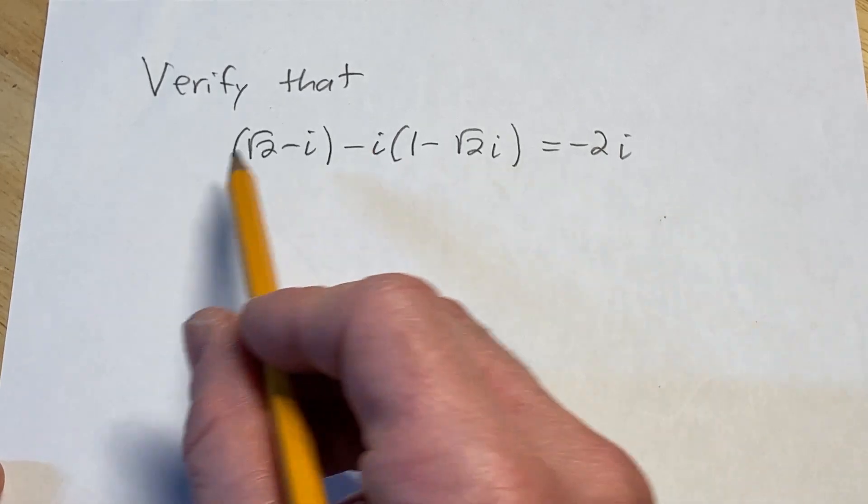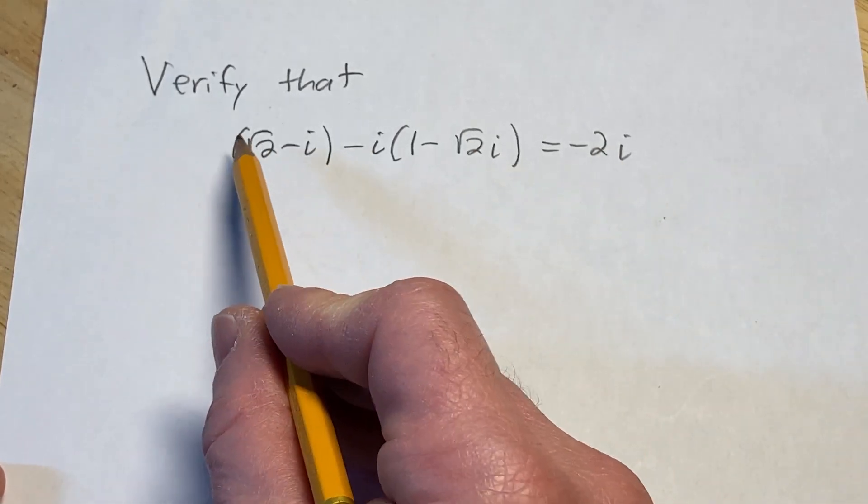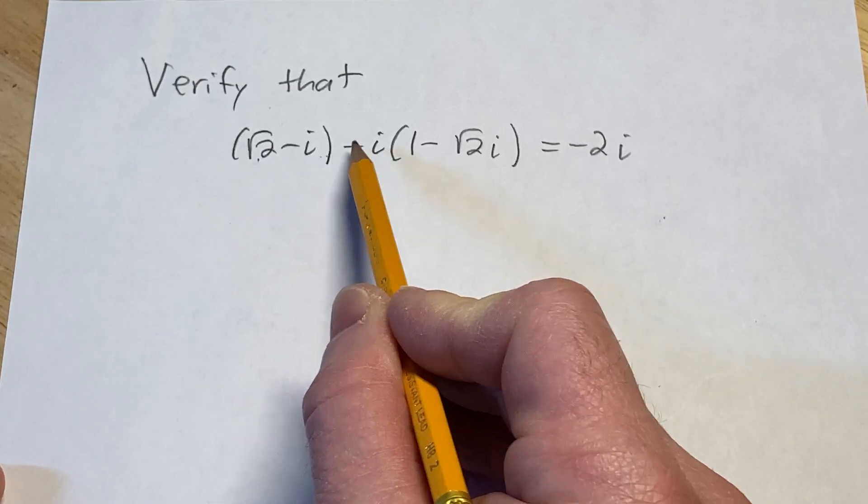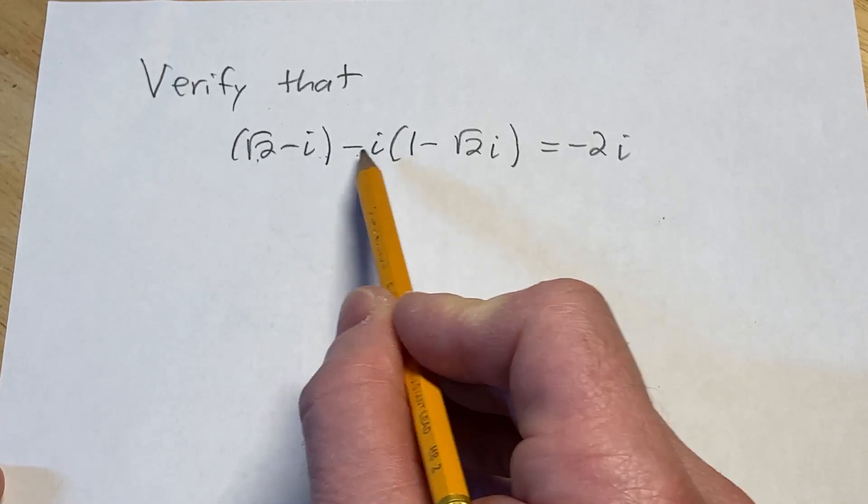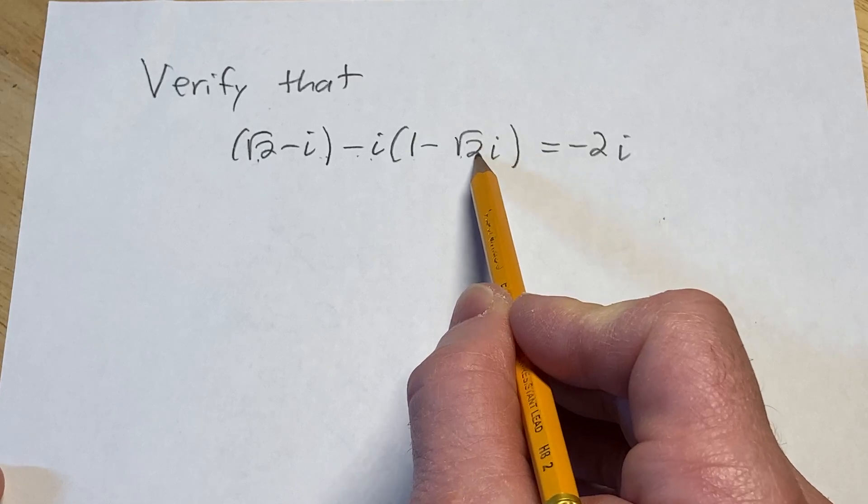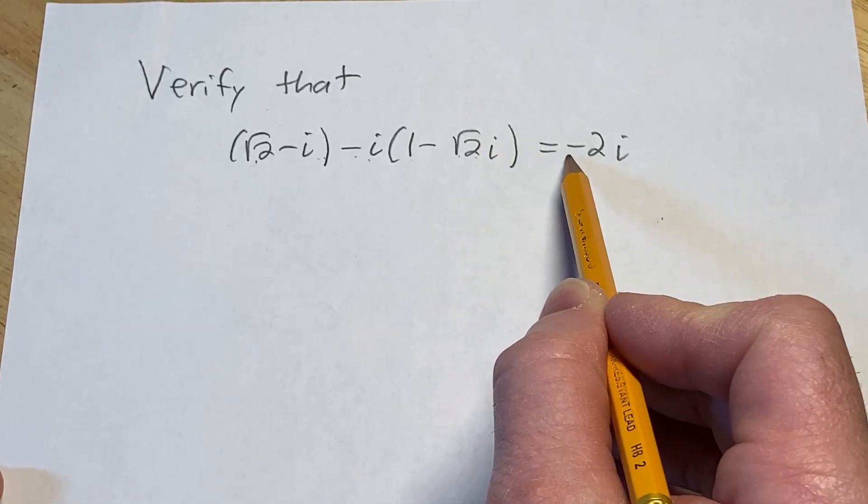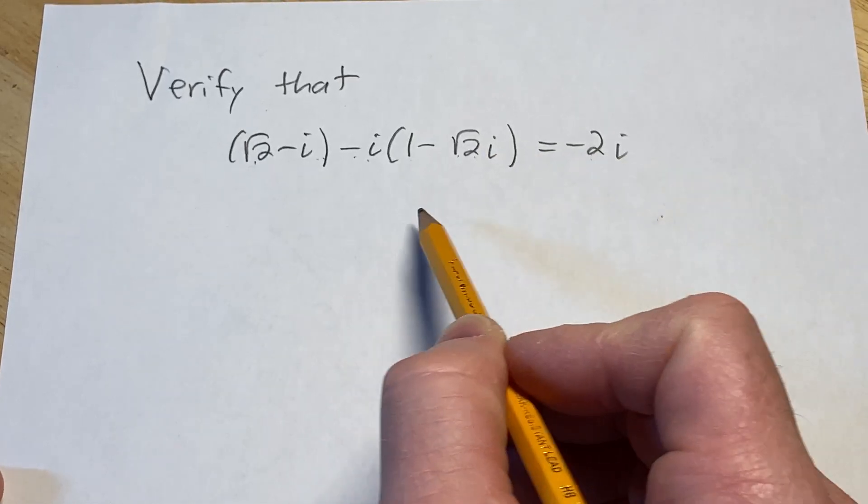Hi, in this video we're going to verify this equation. We have the square root of 2 minus i minus i times parentheses 1 minus square root of 2 times i equal to minus 2i.